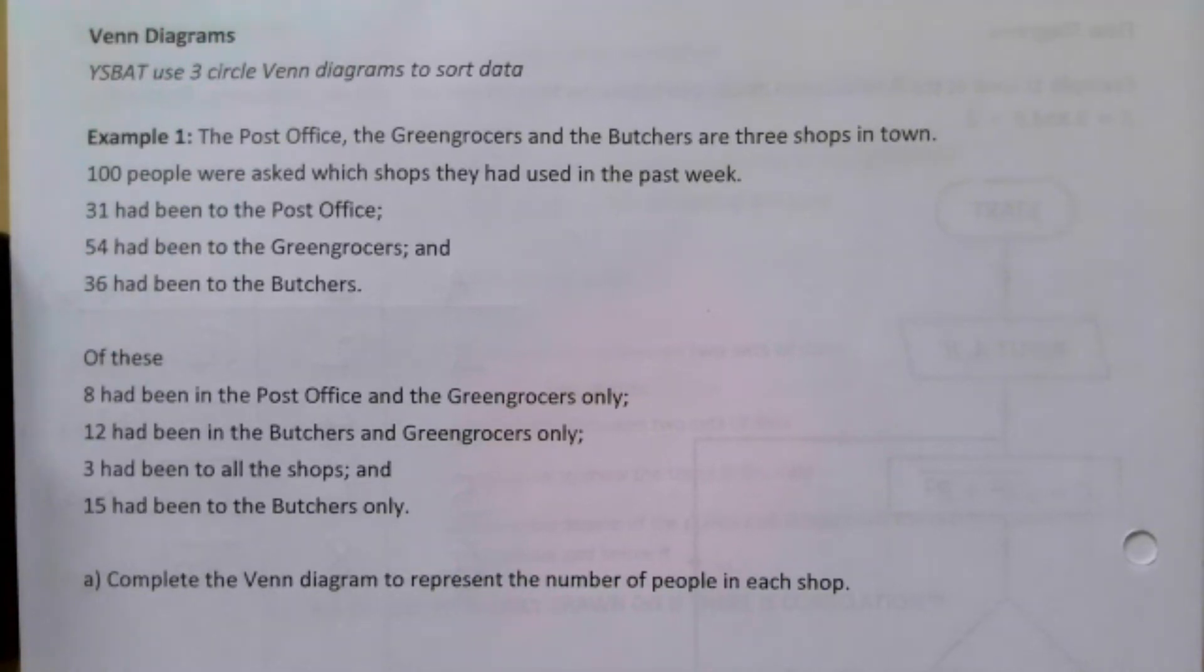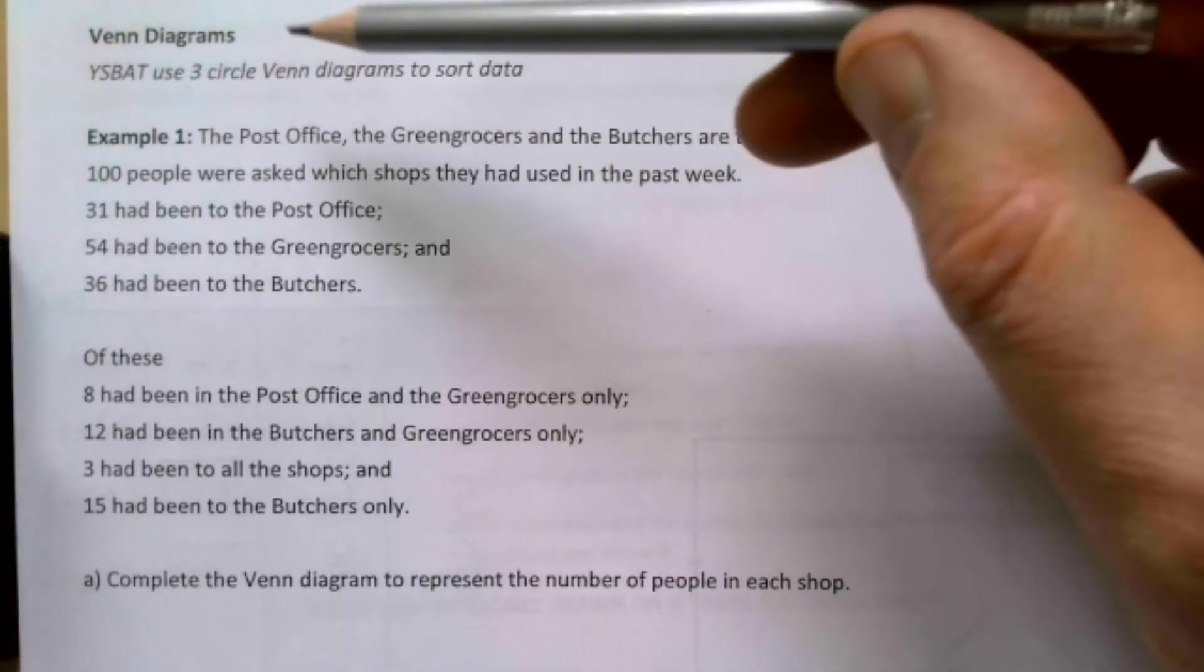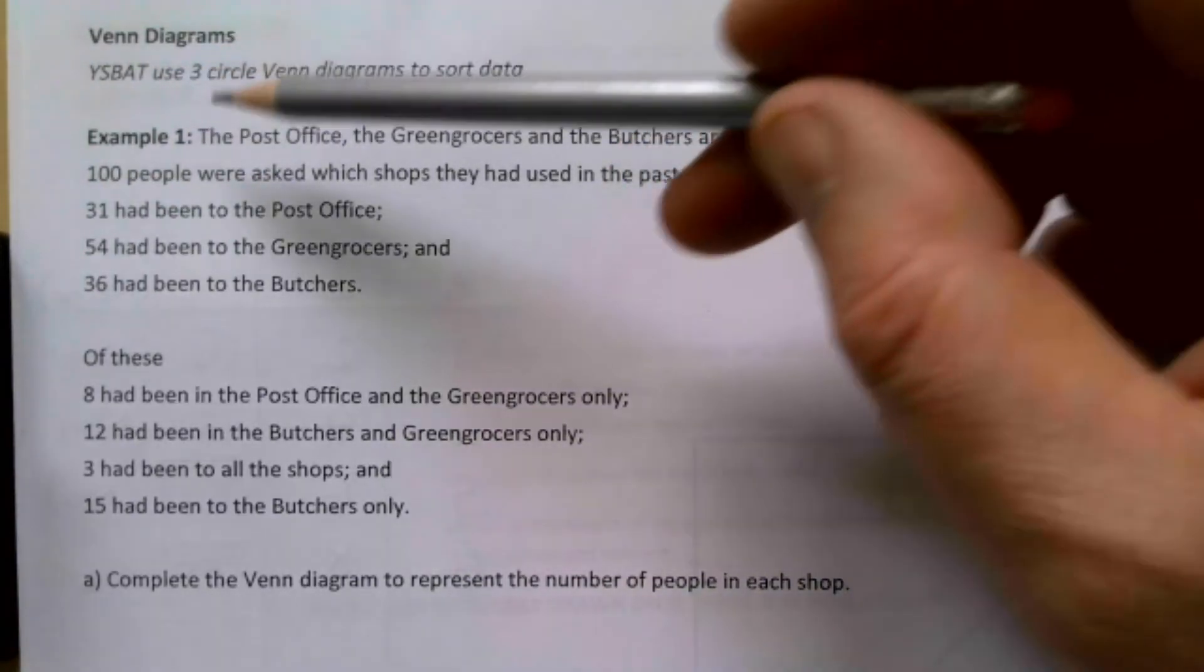This is GCSE Accelerated Maths, we're on Unit 17 Statistics and we're taking a look at Venn Diagrams. You should be able to use three circle Venn Diagrams to sort data.